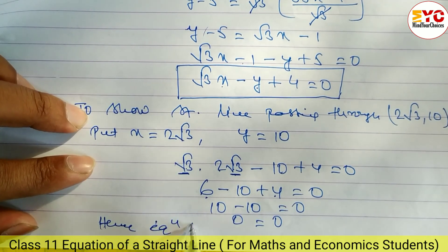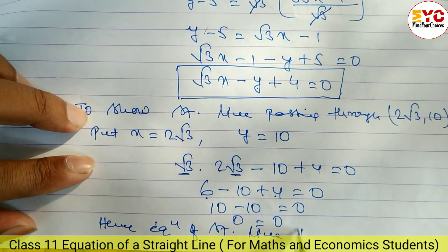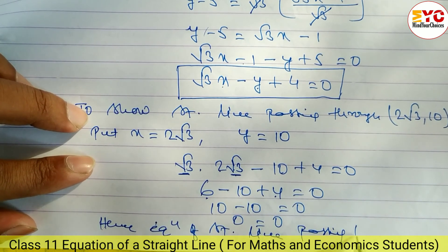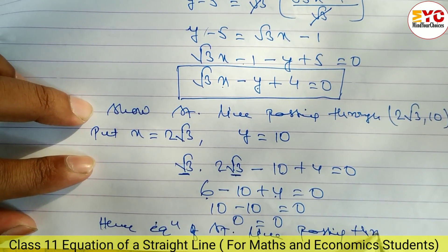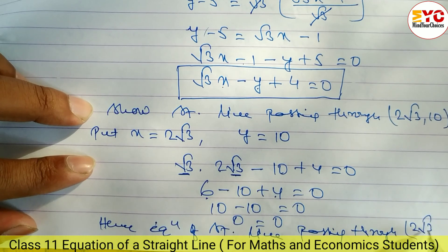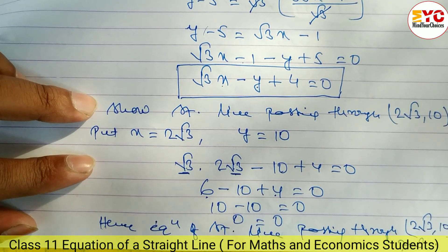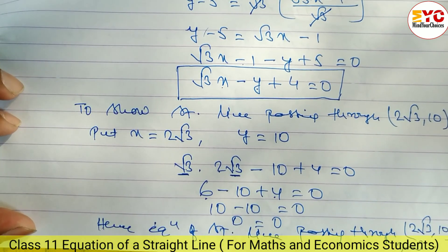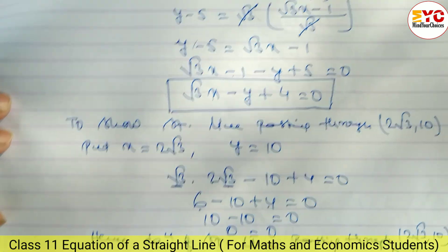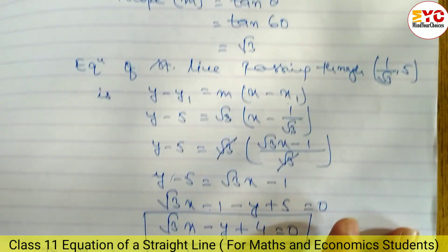Hence the equation of the straight line passes through the point (2√3, 10). It is proved.